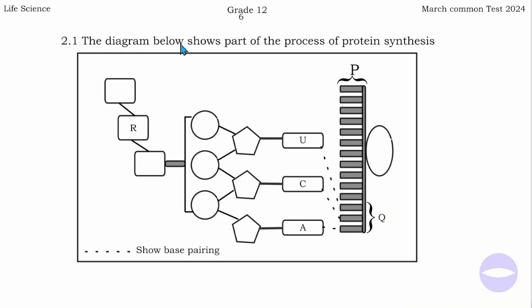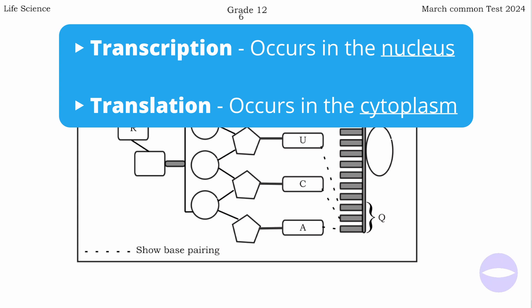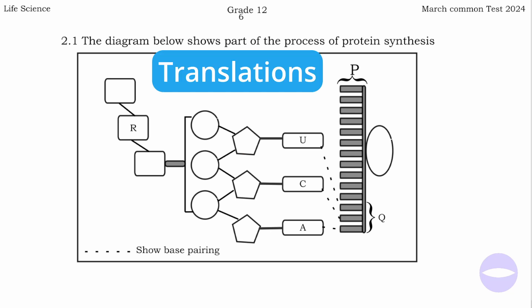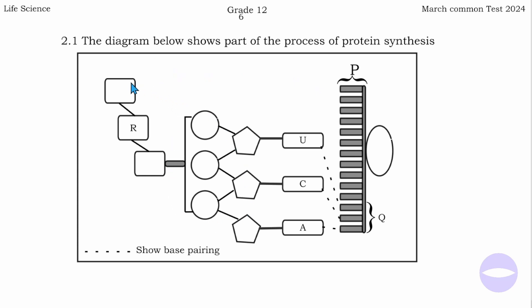Question 2.1: The diagram below shows part of the process of protein synthesis. We know that protein synthesis is divided into two phases — transcription and translation. Transcription occurs in the nucleus of a cell, while translation occurs in the cytoplasm. What we see here is a single strand — this is not a DNA, it's a mRNA, a messenger RNA. The messenger RNA pairs with tRNA, so this is translation, not transcription. This is tRNA, and the tRNA carries amino acids.